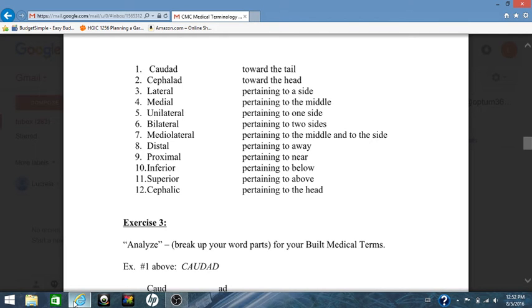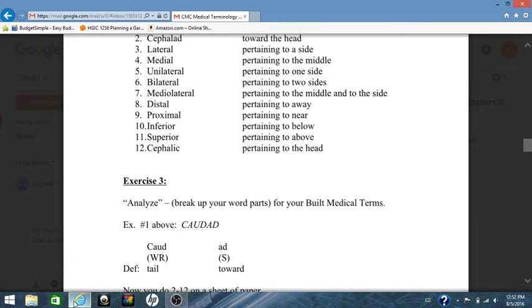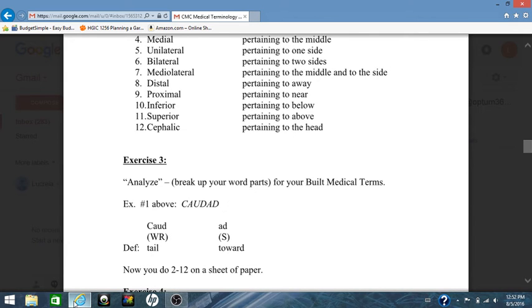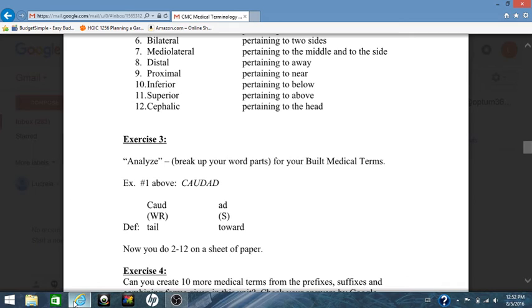So your exercise 3 for this unit is to analyze. And remember I said analyze means break up your word parts for your built medical terms. So for example, in number 1 above, Caudad. C-A-U-D is your word root which means tail. A-D is your suffix which means toward. So again, do that for numbers 2 through 12 above on your built medical terms. Break it up into its word parts. Analyze it and break it up into its word parts. Identify the word parts and give the definition of each.